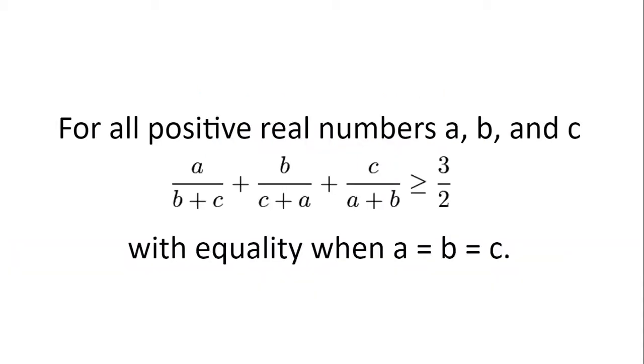For all positive real numbers a, b and c, a divided by b plus c plus b divided by c plus a plus c divided by a plus b is greater than or equal to three halves, with equality when a equals b equals c.